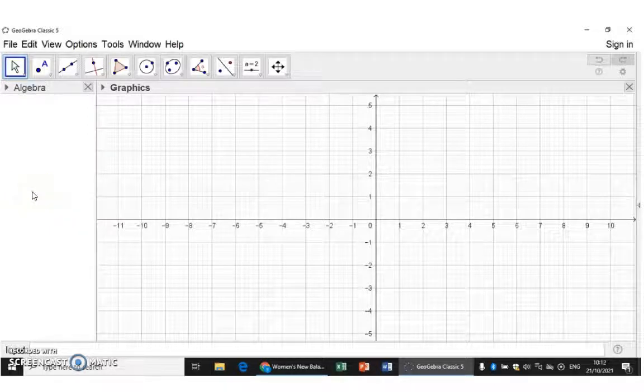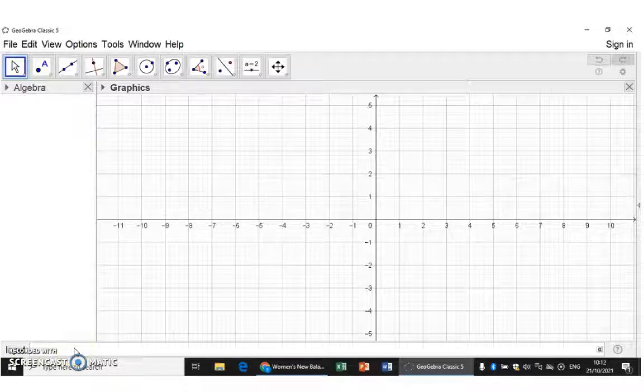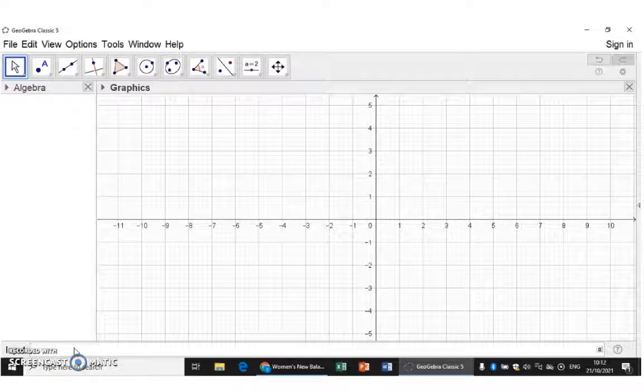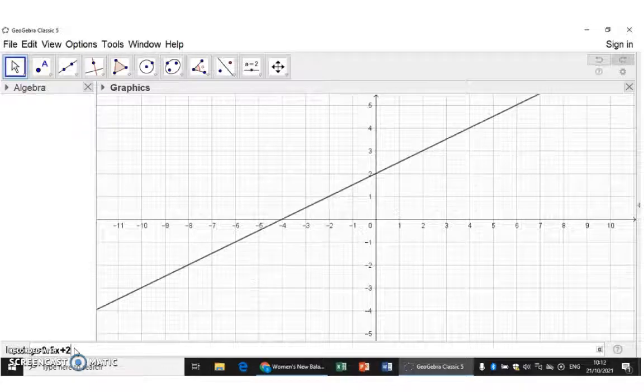When we want to draw a graph of a function, you will use the input bar at the bottom and you can use this in different ways. The first option is to simply enter the equation for that specific function. So let's do a straight line and the equation is y equals 0.5x plus 2.